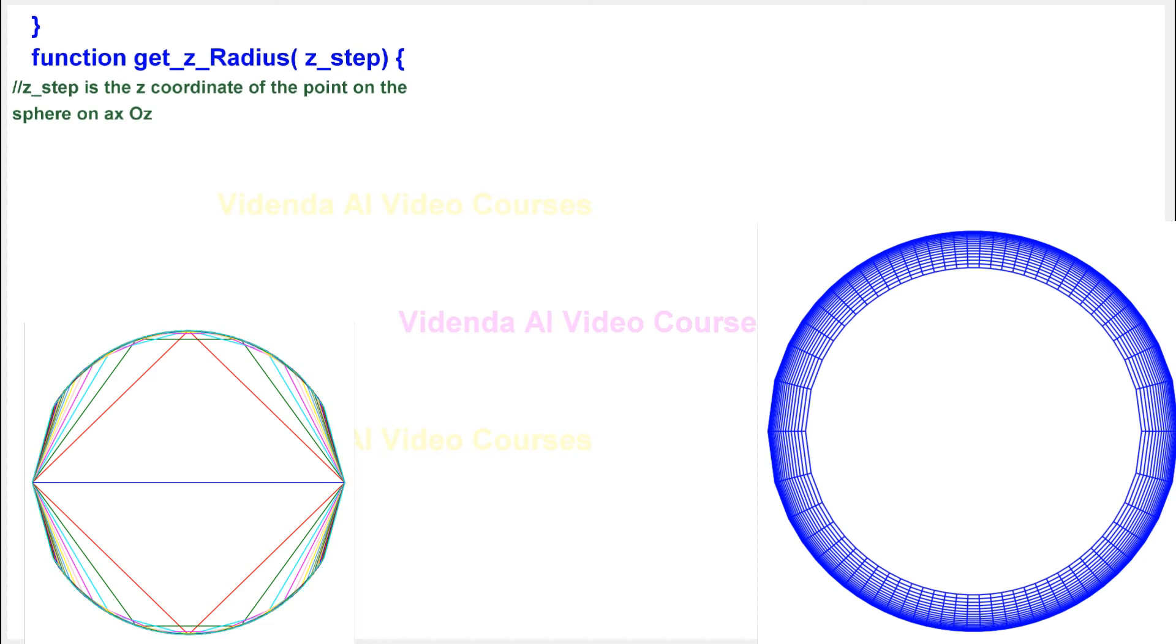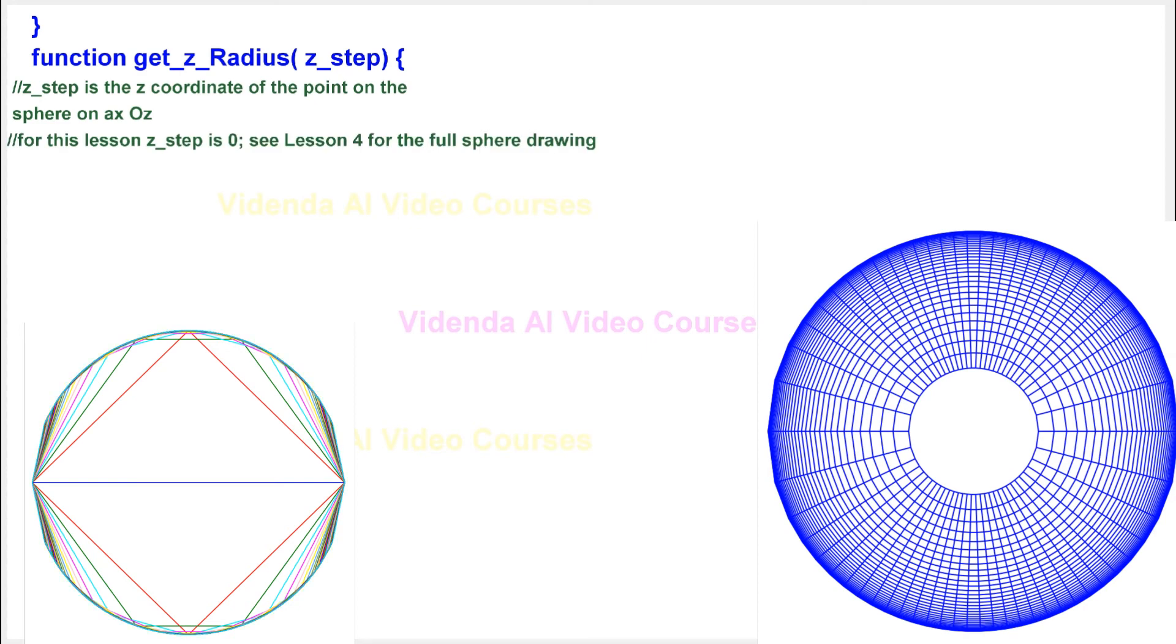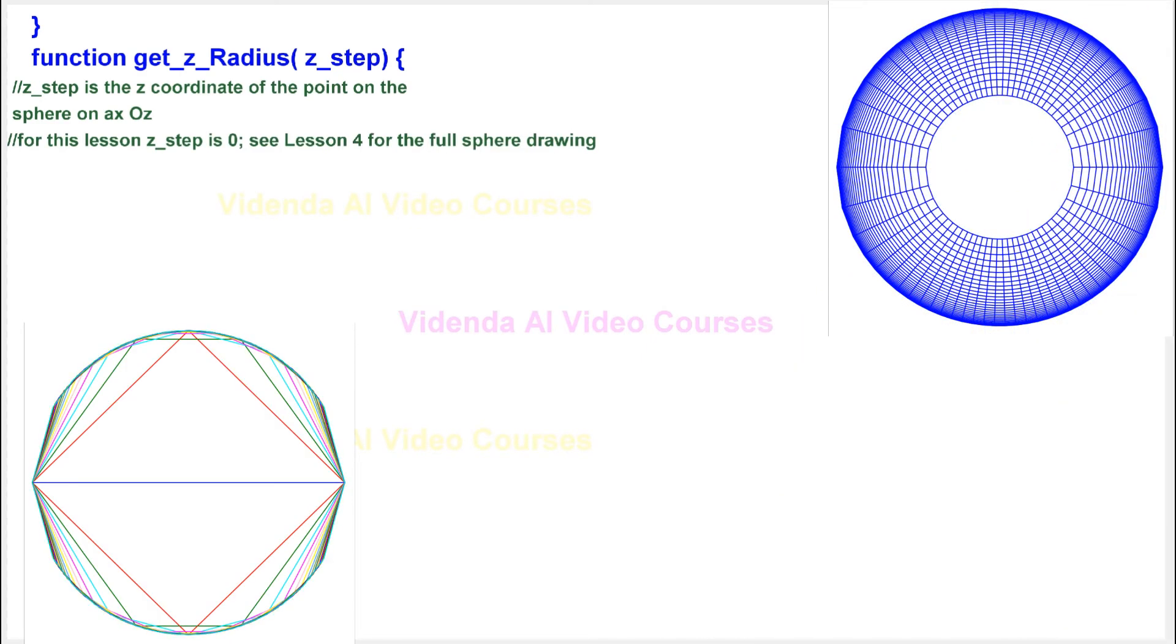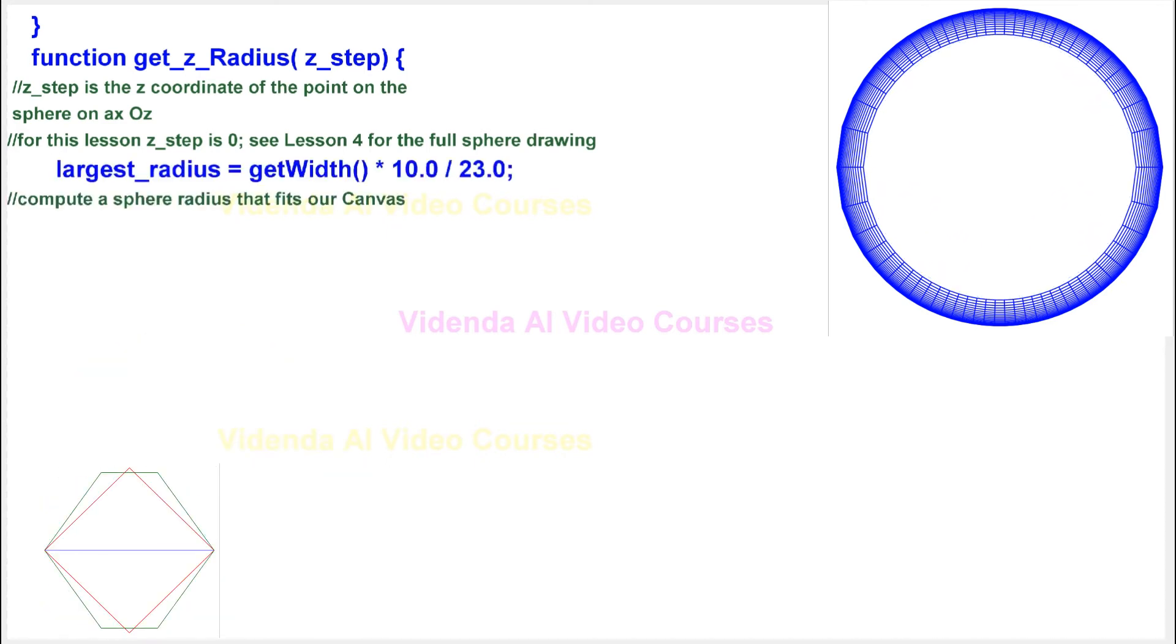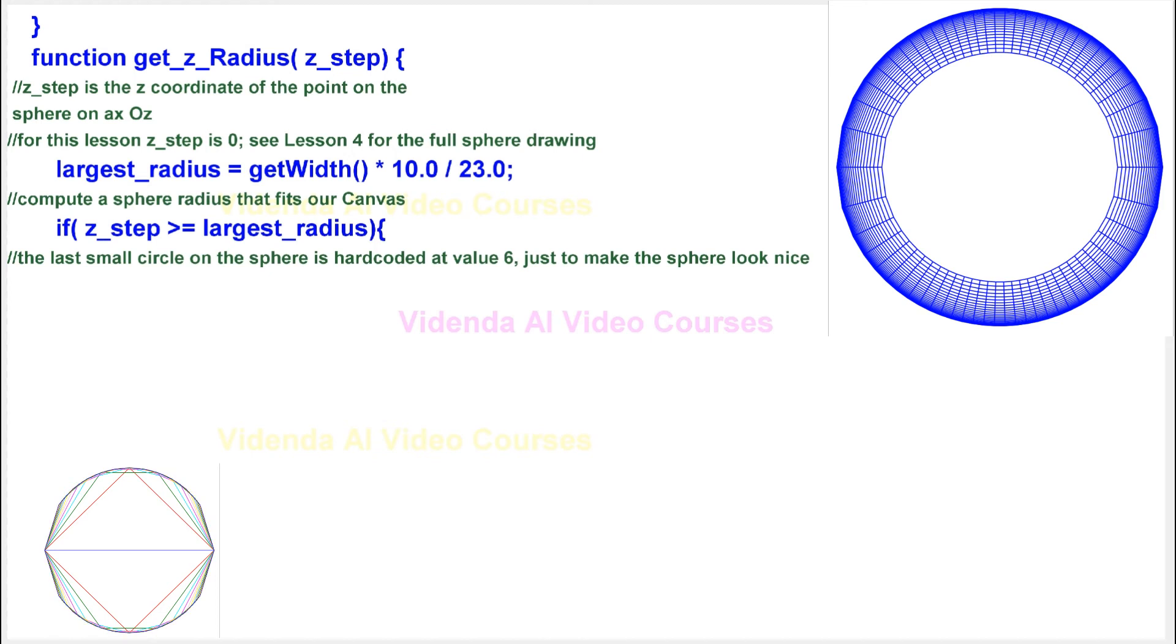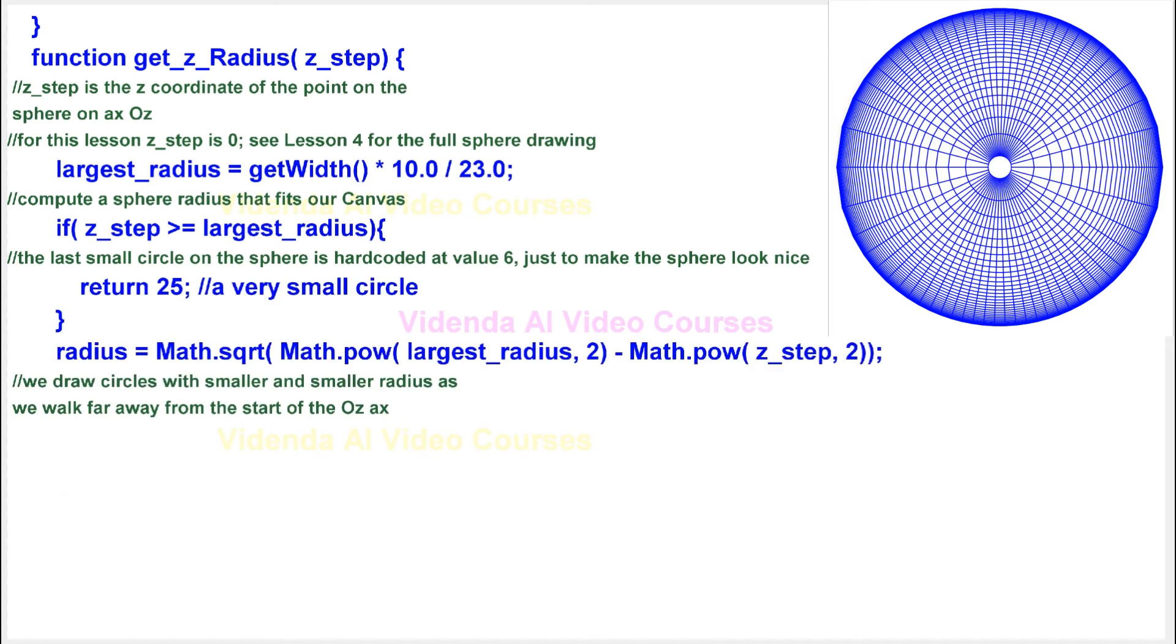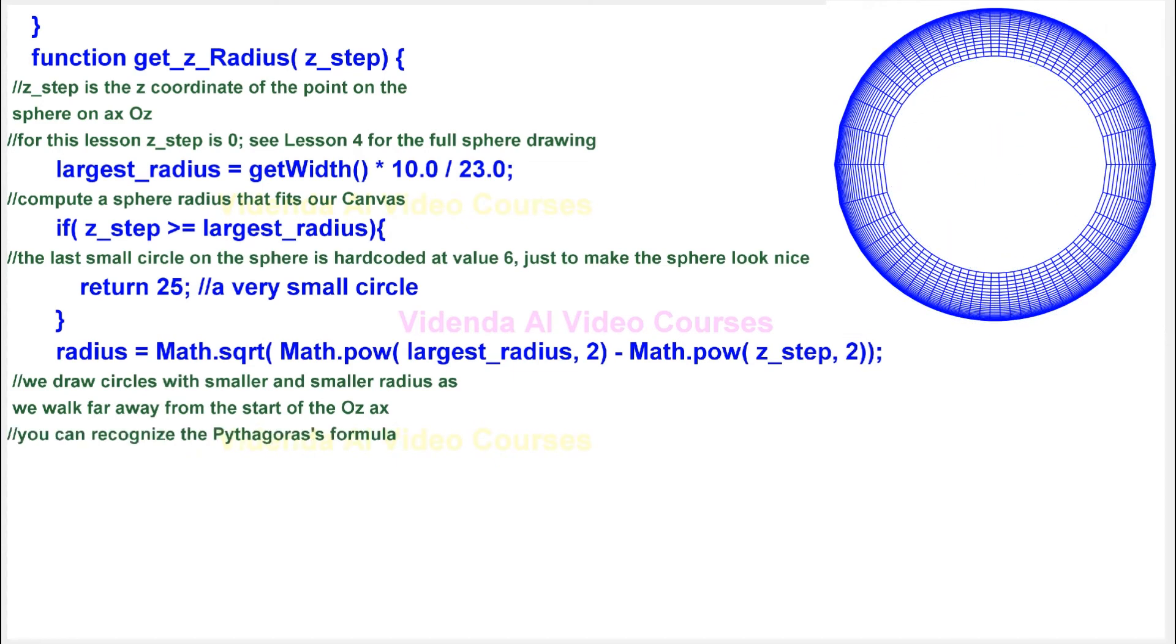z_step is the z-coordinate of the point on the sphere on Axe Oz. For this lesson z_step is 0. See lesson 4 for the full sphere drawing. Compute a sphere radius that fits our canvas. The last small circle on the sphere is hard-coded at value 6, just to make the sphere look nice. We draw circles with smaller and smaller radius as we walk far away from the start of the Oz Axe. You can recognize the Pythagoras formula.